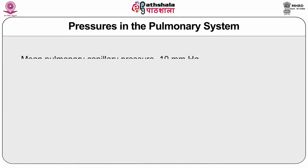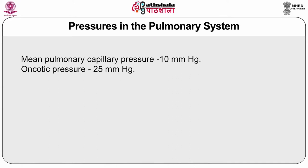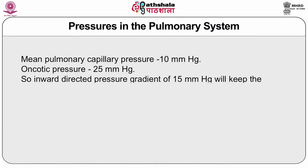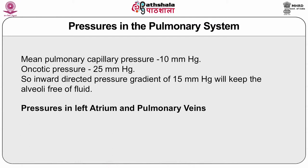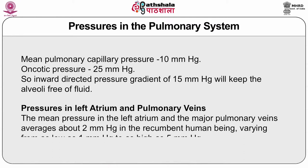The mean pulmonary capillary pressure is about 10 mmHg, whereas oncotic pressure is 25 mmHg. The resulting inward-directed pressure gradient of 15 mmHg is very low and will keep the alveoli free of fluid. The mean pressure in the left atrium and major pulmonary veins averages about 2 mmHg in the recumbent human being, varying from as low as 1 mmHg to as high as 5 mmHg.